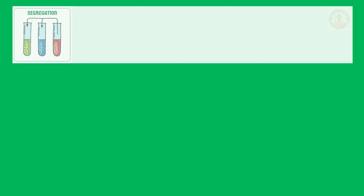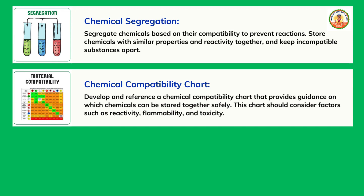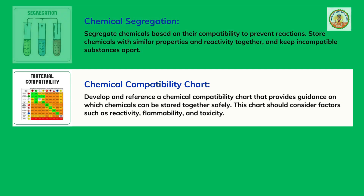Chemical Compatibility Chart: Develop and reference a chemical compatibility chart that provides guidance on which chemicals can be stored together safely. This chart should consider factors such as reactivity, flammability, and toxicity.